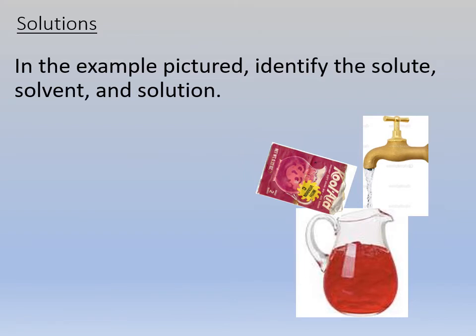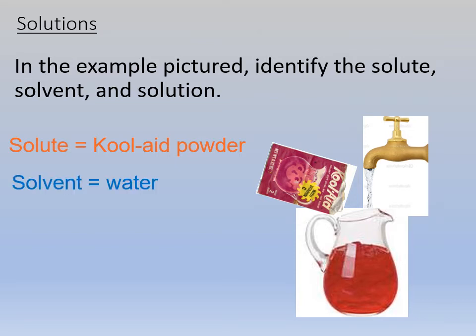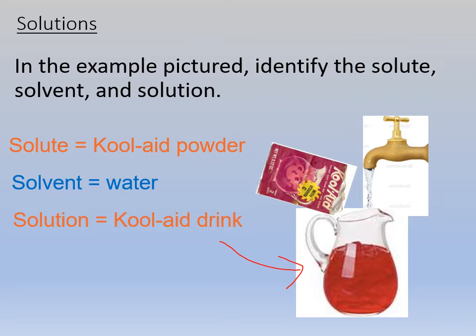If we were making Kool-Aid, what would be our solute, solvent, and solution? Our solute is Kool-Aid — Kool-Aid gets dissolved. The solvent is water, Kool-Aid gets dissolved in water. And then the solution is what you actually drink. Looking at that solution, can you tell that there's sugar or red dye number six in it? You know because you're a human, but looking at it, you can't tell there's other stuff in it. It just looks like a red liquid. That's a solution.